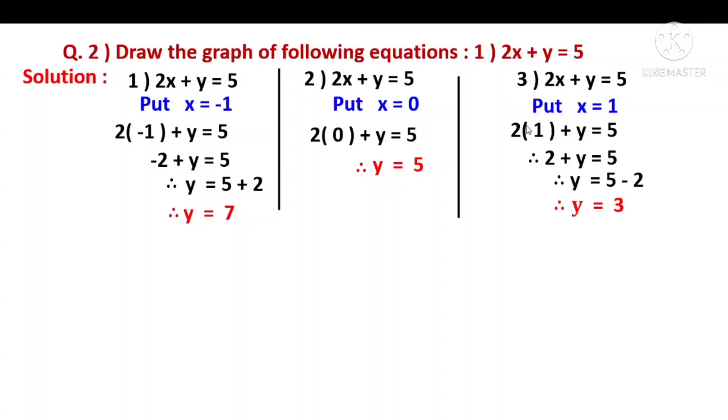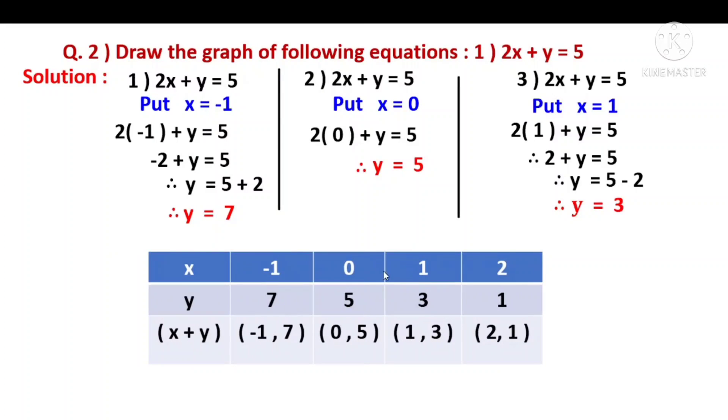Y values are in red color, x values are in blue. Look here, x values are minus 1, 0, 1. Y values are 7, 5, 3. If x value is 2, then 4 plus y equals 5, so y equals 1. The four points are minus 1 comma 7, 0 comma 5, 1 comma 3, 2 comma 1.